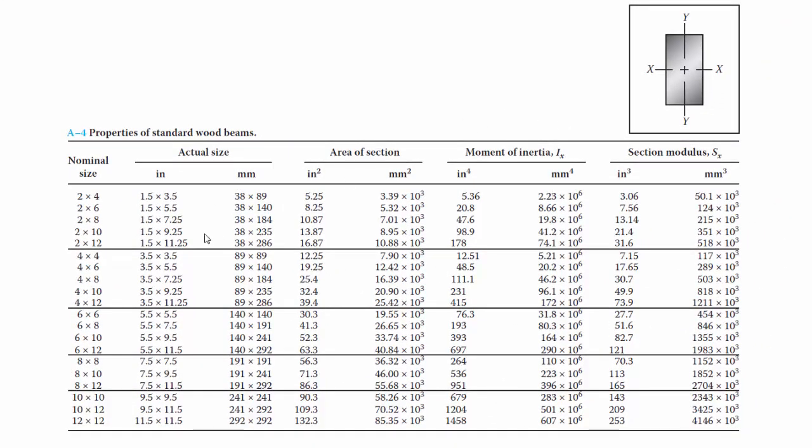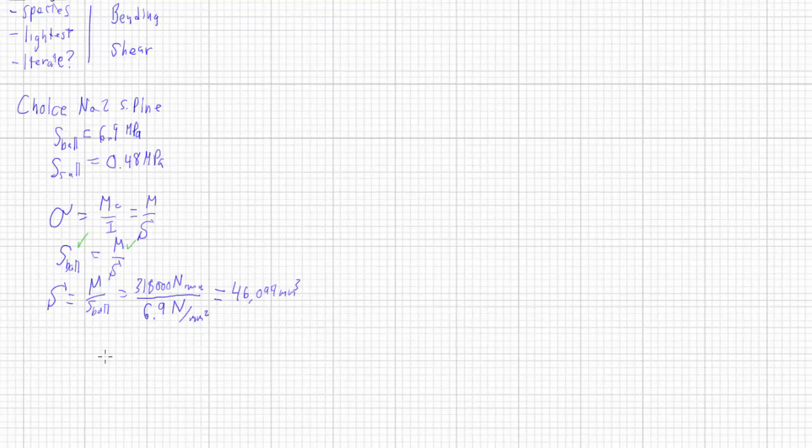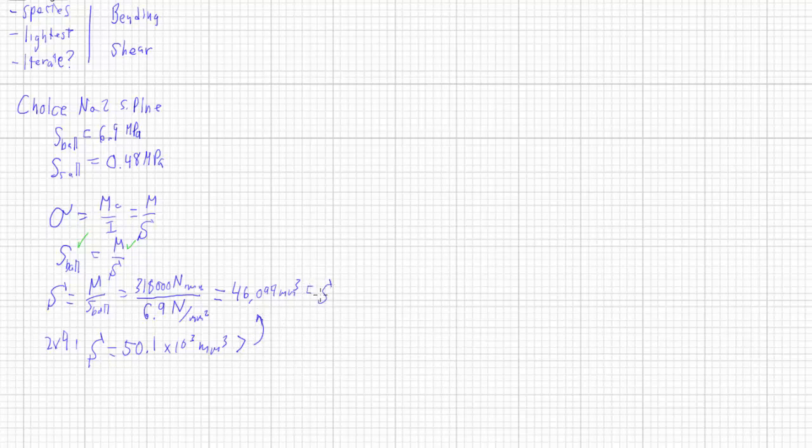Now we have this value for our S or our shape modulus of 46,094 millimeters to the third, and we just need to look for a shape that has at least that much S. If you look at the different sizes here, we have the section modulus of 50.1 times ten to the third millimeters cubed for a two by four. That's just a little bit more than what we were looking for. So we can use two by four where S equals 50.1 times ten to the third millimeters cubed. That's greater than the required S, so this should work in bending.